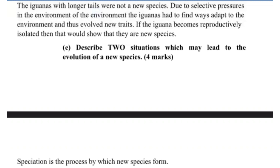And finally, describe two situations which may lead to the evolution of a new species. Recall that speciation is the process by which a new species is formed. A new species can form when a group of individuals remains separated from the rest of a species long enough to evolve different traits. The longer the group remains isolated, the more likely it is to evolve into a new species. This occurs via geographic and reproductive isolation.